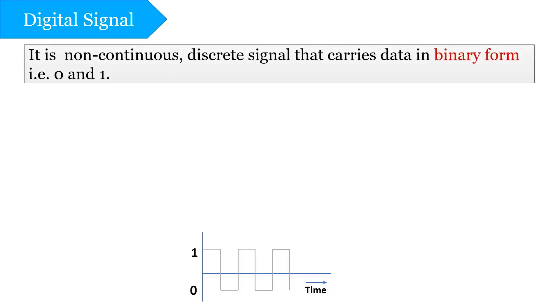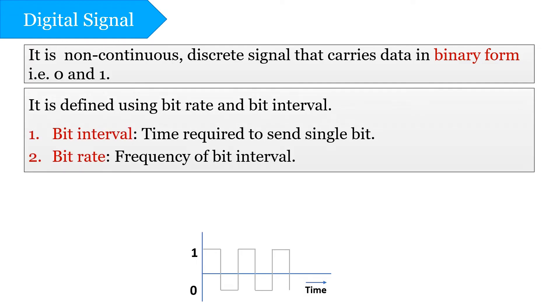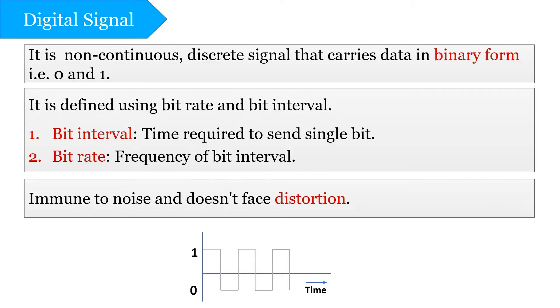Digital signal is a non-continuous discrete signal and it carries information in binary form, i.e., in zeros and ones. Digital signals are defined using bit rate and bit interval, where bit interval is the time required to send a single bit. Bit rate is the frequency of bit interval, i.e., how many bits can be sent per unit time. Digital signals are immune to noise and thus they don't face any distortion.